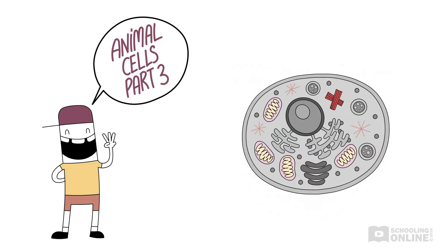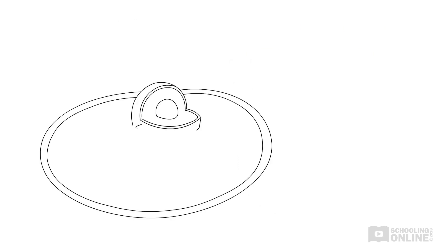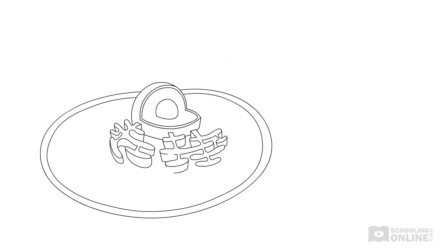In the third lesson, we'll cover animal cell components involved in energy transformations and maintaining cell structure. These include the mitochondria, the cytoskeleton and the centrosome. Now, there's a lot happening inside each animal cell. It's hard work keeping an entire organism alive.